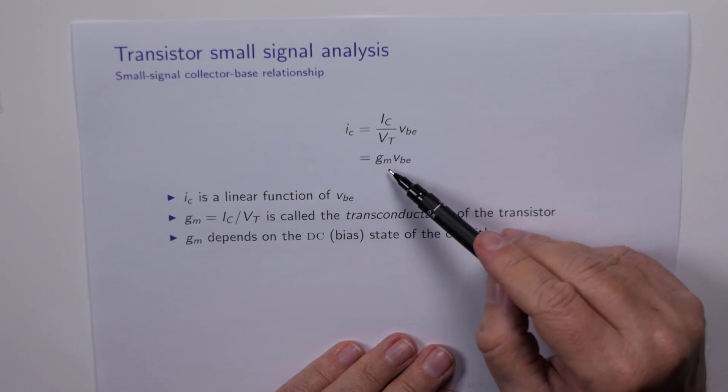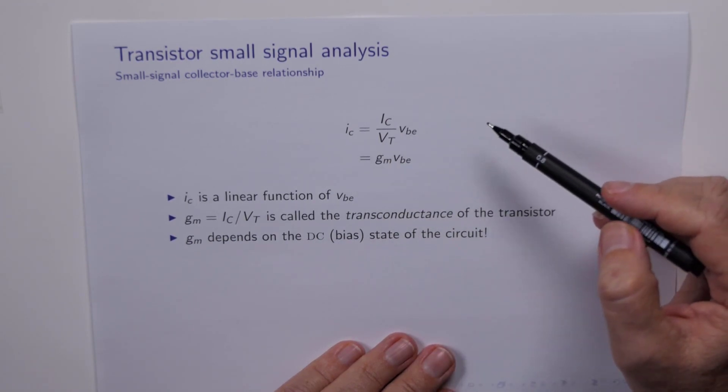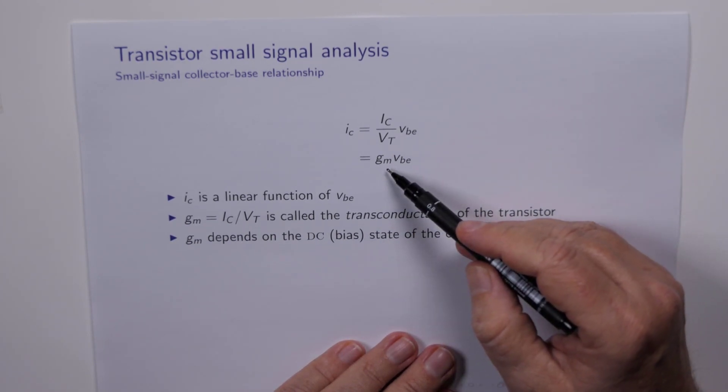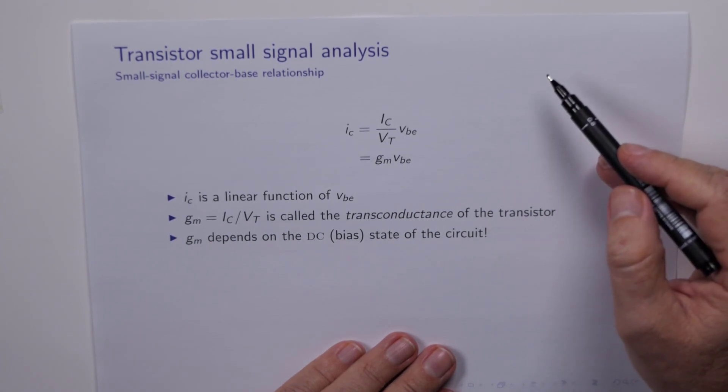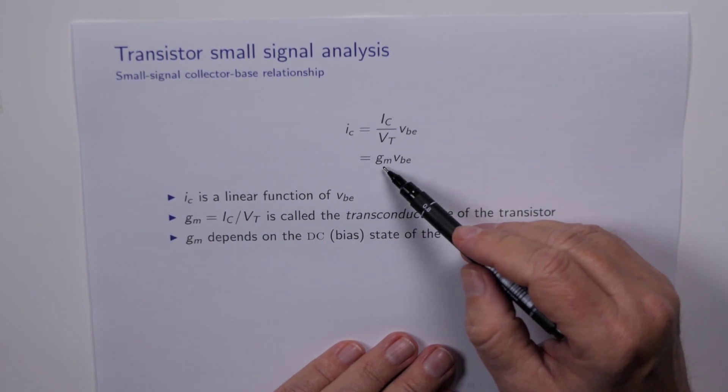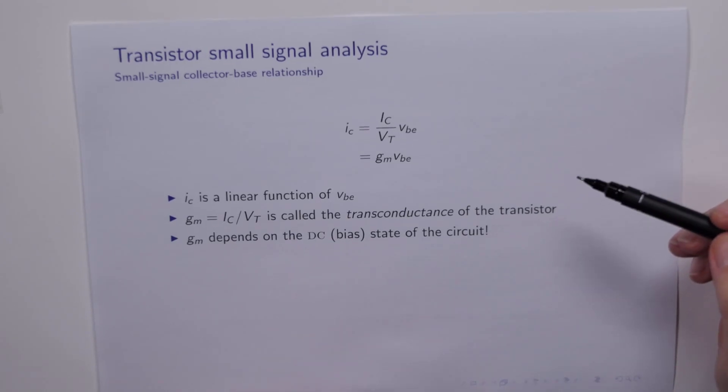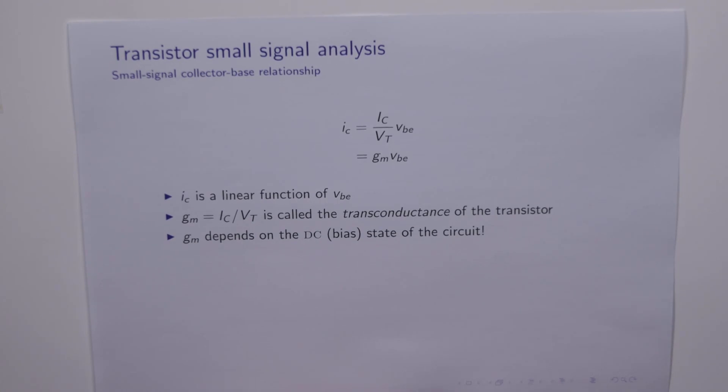So we've got this very nice relationship now, a nice linear relationship between the small signal collector current, the small signal base emitter voltage, and this new transistor parameter for us called the transconductance. There's one more very interesting thing, and that is that the transconductance, which is an AC parameter, depends on the DC collector current. So this is a very interesting result, and it means that we can't really do an AC analysis of the circuit until we have already done a DC analysis.